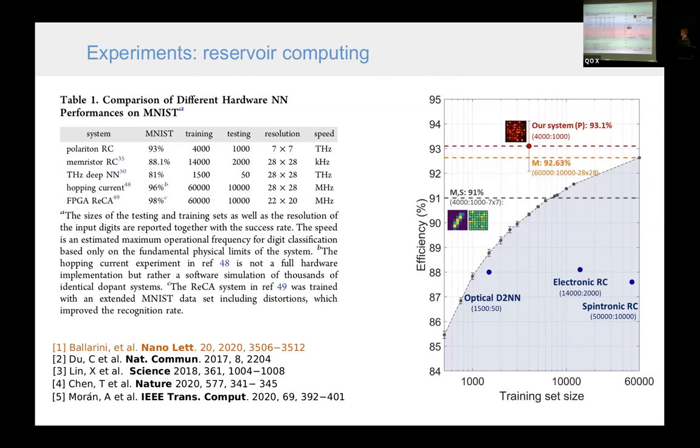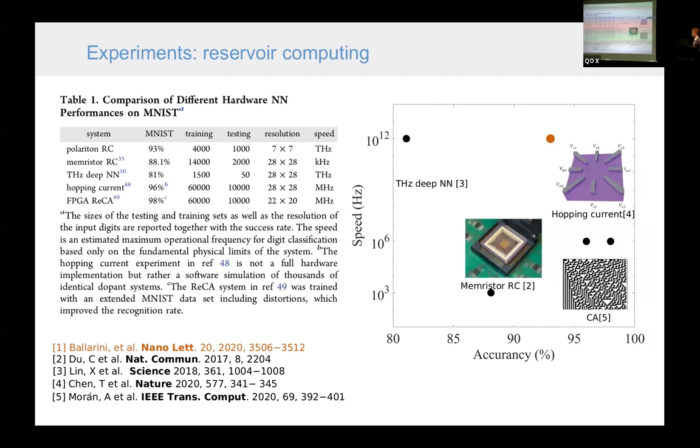And we observed that the accuracy of our system is quite high. Actually it is highest of any other hardware implementations of reservoir networks. And it was higher than linear regression, which is depicted here with the gray line, which is an important benchmark because it tells that this reservoir computing method actually brings some advantage over linear algorithms. And what is also important that the speed of the system potentially can be quite large. The natural timescale of polaritons is in picoseconds. So we can think of terahertz speed.